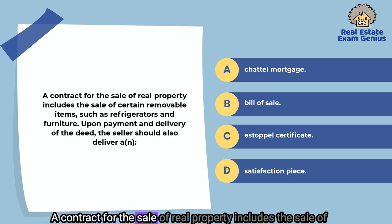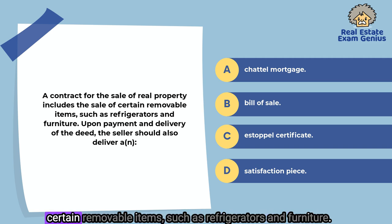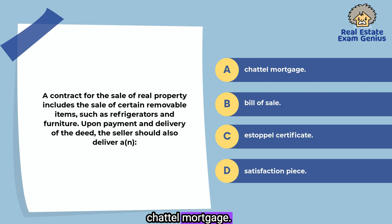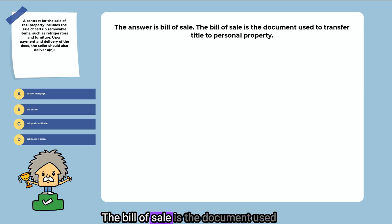A contract for the sale of real property includes the sale of certain removable items such as refrigerators and furniture. Upon payment and delivery of the deed, the seller should also deliver a: chattel mortgage, bill of sale, estoppel certificate, or satisfaction piece. The answer is bill of sale. The bill of sale is the document used to transfer title to personal property.